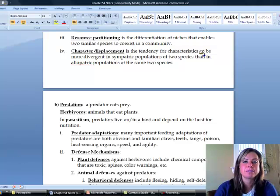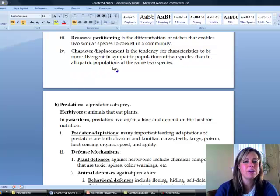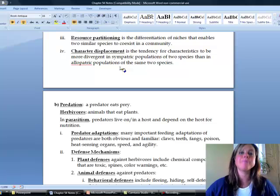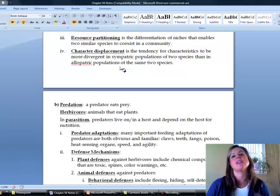So character displacement right here is a tendency for characteristics to be more divergent or different in sympatric populations, all living in one area of two species, than allopatric populations, which are ones that have been separated, right? So the reason for that is because the ones that are still right next to each other, there's a lot of pressure for them to be different from one another because of that direct competition. So that's called character displacement.